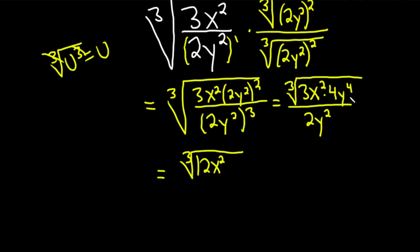And here we have y to the fourth so we can extract a cube from that, so I'm going to write it as y, and then the rest of it would be y, and I'll separate that into another cube root over 2y squared.